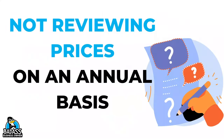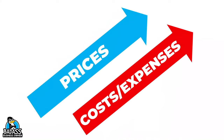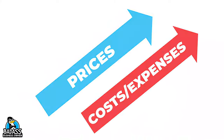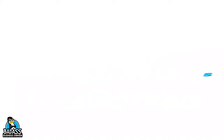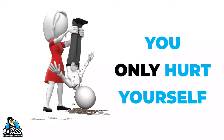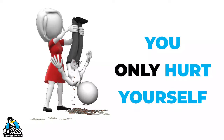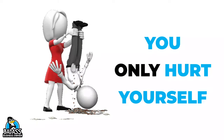The fourth reason small business owners fail to price correctly is not reviewing their pricing on a regular basis. It's important to look at your prices at minimum once a year and make adjustments accordingly. Over the last few years, prices and costs have gone up dramatically, yet so many small business owners haven't changed their prices at all. What they are doing is absorbing those higher costs and expenses on their end, not passing them along to their customers — and thus they are effectively taking a pay cut.